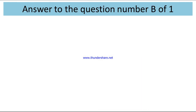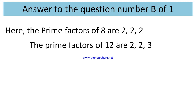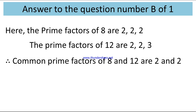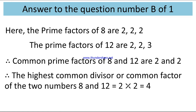Answer to question number (b) of 1. The prime factors of 8 are 2 × 2 × 2. The prime factors of 12 are 2 × 2 × 3. So the common prime factors of 8 and 12 are 2 and 2. Therefore, the highest common divisor (HCF) of 8 and 12 equals 2 × 2 = 4.